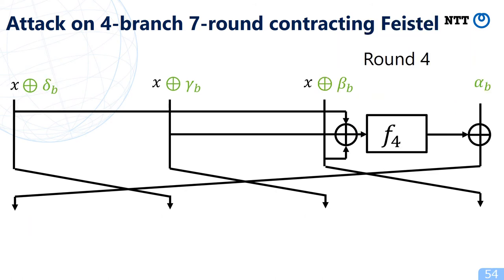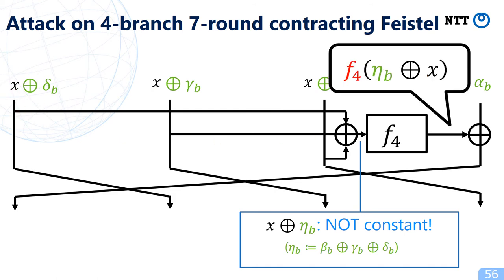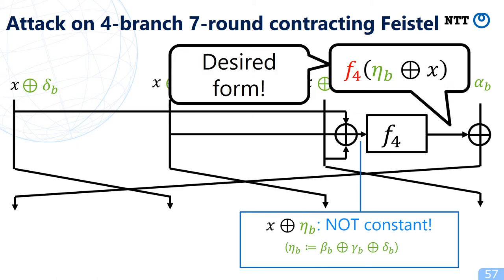In the fourth round, unfortunately the input to f_4 is no longer a constant because one x cannot be canceled. However, the output of f_4 has the desired form: f_4(constant ⊕ x), where the constant depends on secret values. This is exactly the desired form to apply Simon's algorithm.